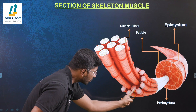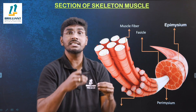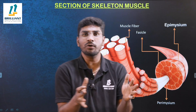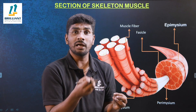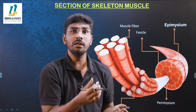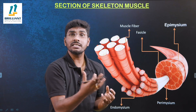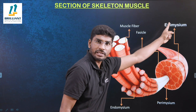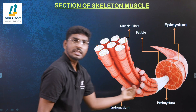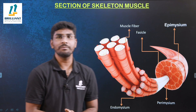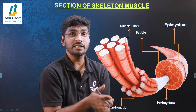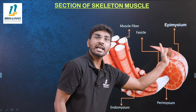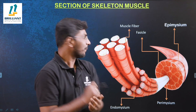Around each muscle fiber there is also a connective tissue membrane called endomysium. For exam and MCQ purposes, remember the order from outside to inside: epimysium (outermost), then perimysium (middle), then endomysium (innermost). If asked to arrange from inside to outside: endomysium, then perimysium, then epimysium.